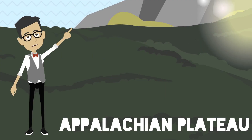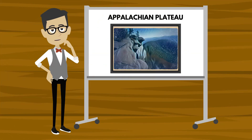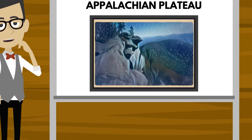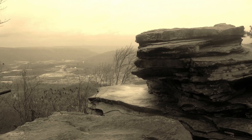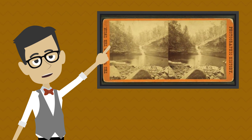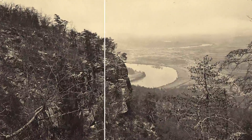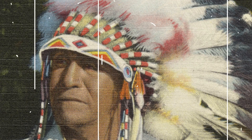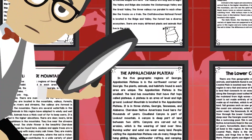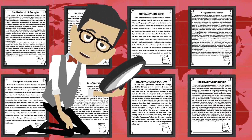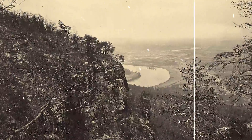The Appalachian Plateau is located within the northwest corner of the state of Georgia. It is the smallest region, and the land contains mountains with flat tops called plateaus — a plateau is an area of level and high ground. Lookout Mountain is located in the Appalachian Plateau, spanning three states: Georgia, Tennessee, and Alabama. Cloudland Canyon is part of Lookout Mountain. A canyon is a deep part of land located between two cliffs, carved out by erosion — the wearing away of land over time by running water and wind. Visitors to the Appalachian Plateau can enjoy hang gliding, hiking, whitewater rafting, and camping.